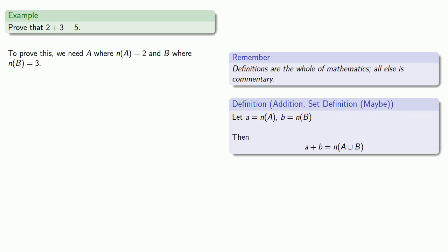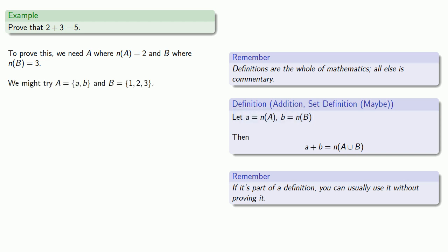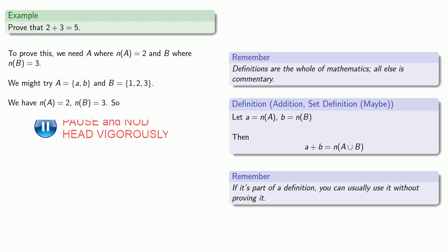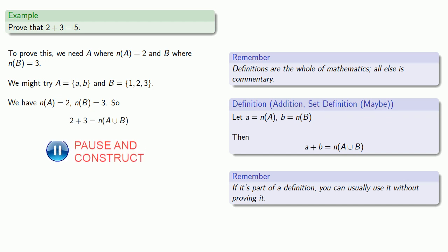Here's a useful but somewhat risky thing to assume: if something is part of a definition, you can usually use it without proving it. In this case, because our definition of addition requires us to have the cardinalities of two sets, we can simply say here are two sets, and claim without further elaboration that the cardinality of A is two and the cardinality of B is three. The definition of addition then requires us to find the union of A and B, and since cardinality of the union is part of our definition, we can state it without further comment. The cardinality is five.